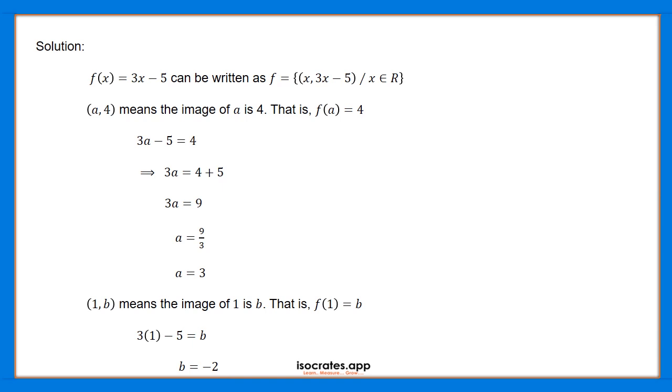Next, the image of 1 is b, that is, f(1) equals b. We substitute x equals 1: 3(1) minus 5 equals b.